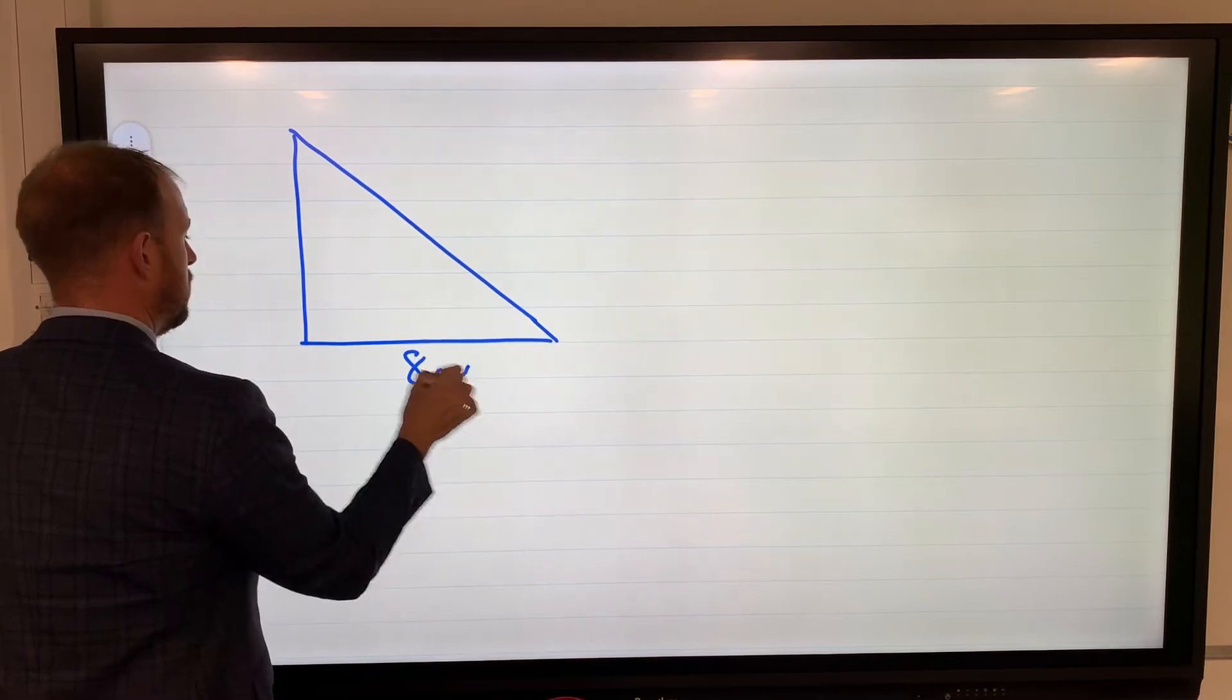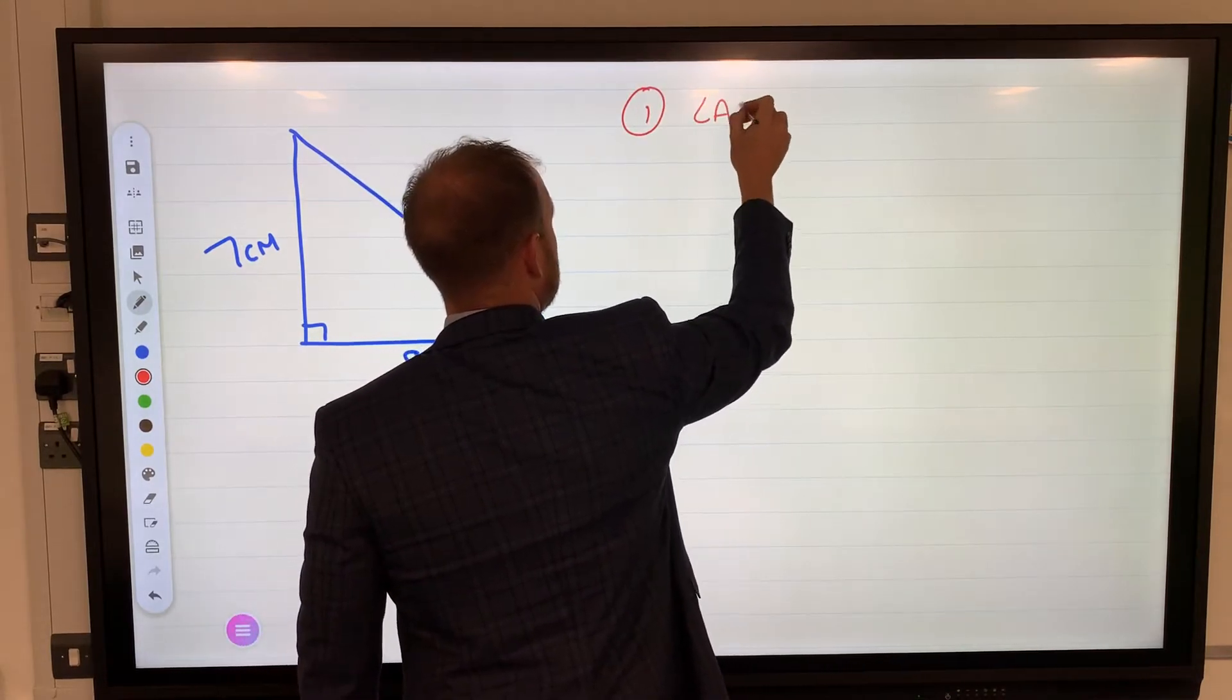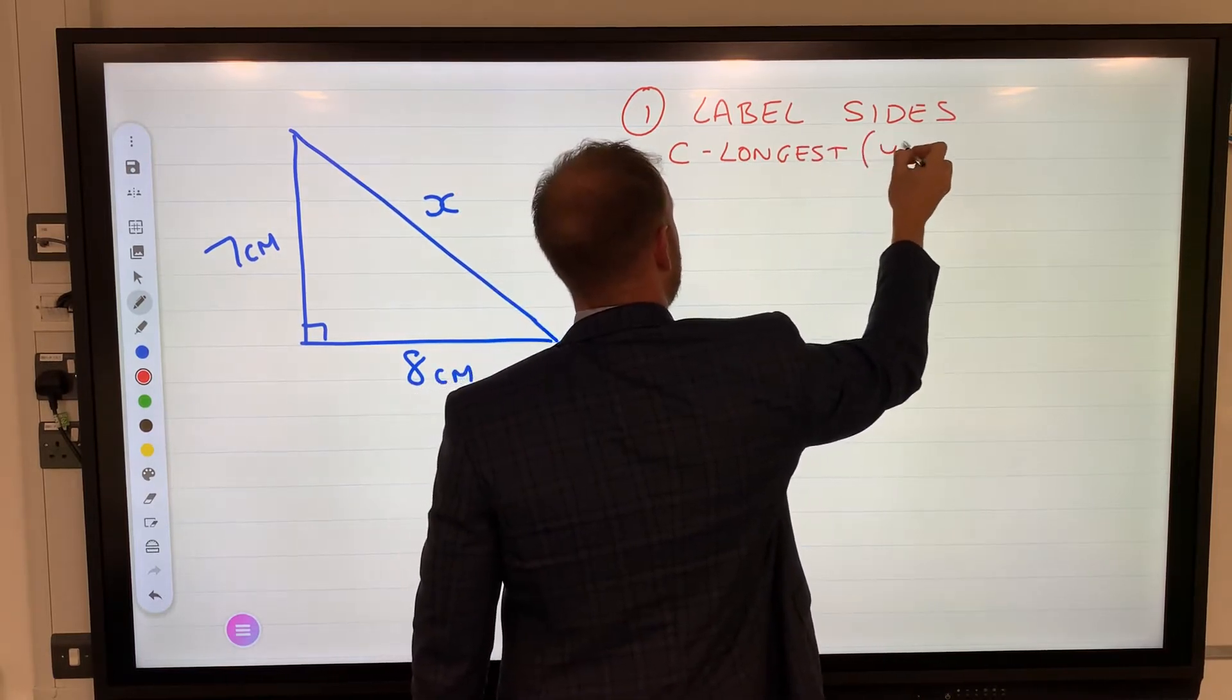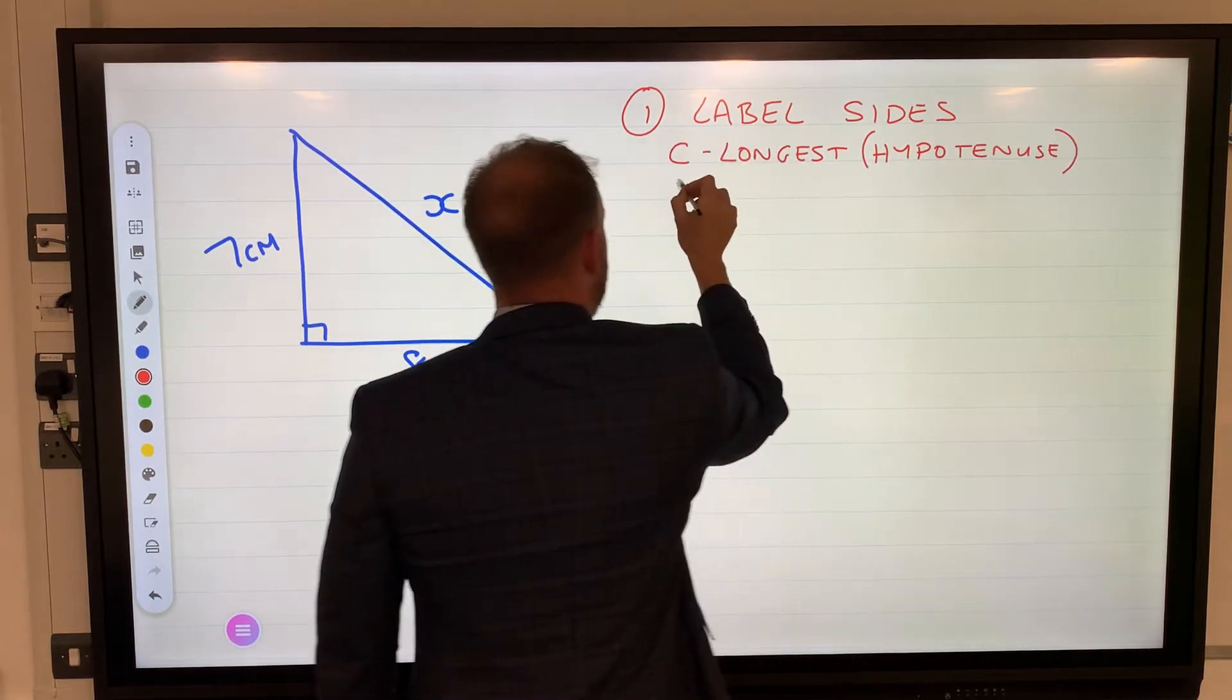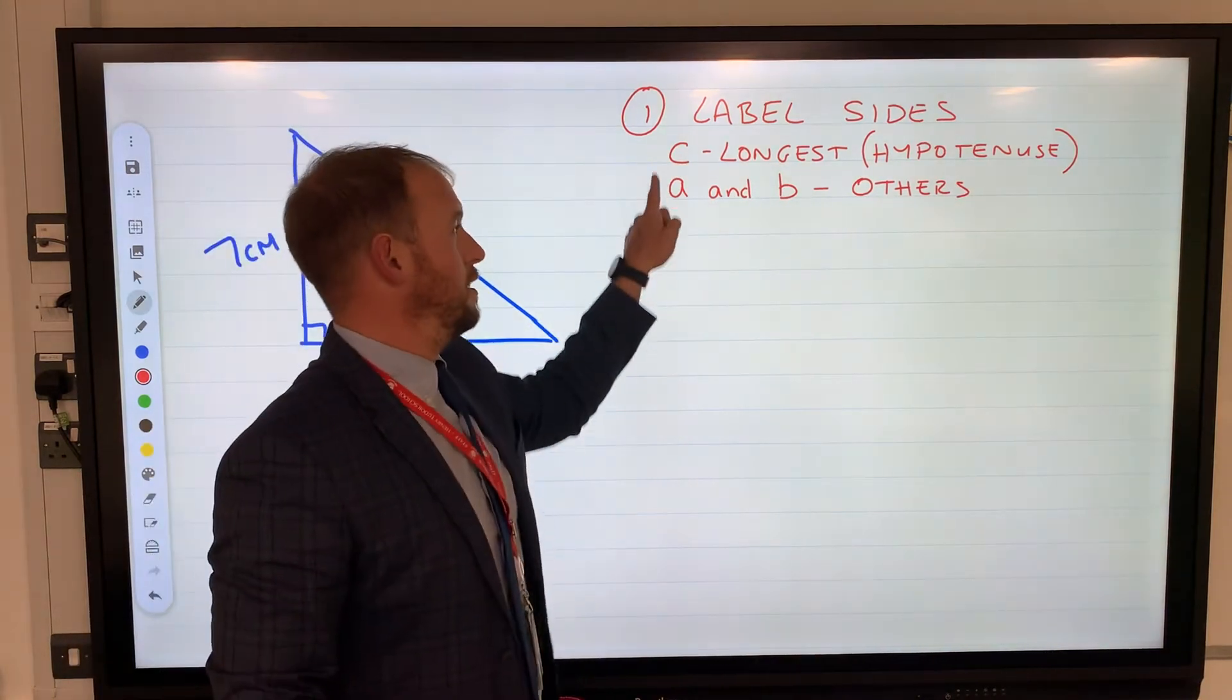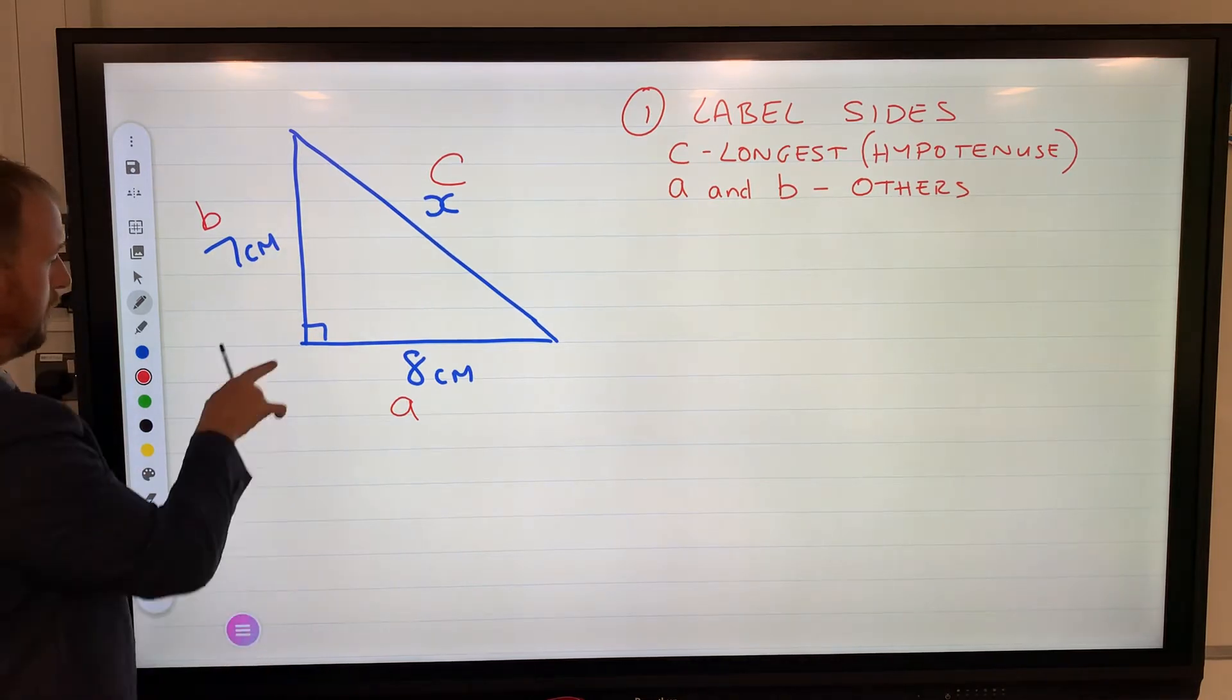Let's have 8 centimeters here, 7 centimeters here, and I want to calculate the value of x. First step: we're going to label sides. C is the longest, also known as the hypotenuse, and a and b are the others. You'll notice I've used lowercase letters - you need to do the same. We use capital letters for the vertices, which are the corners.